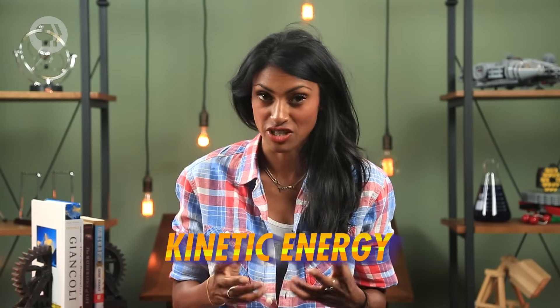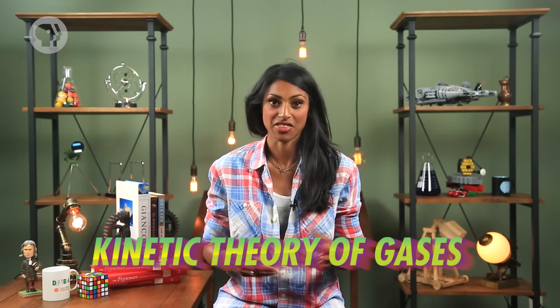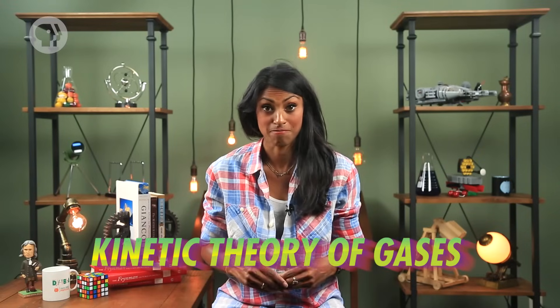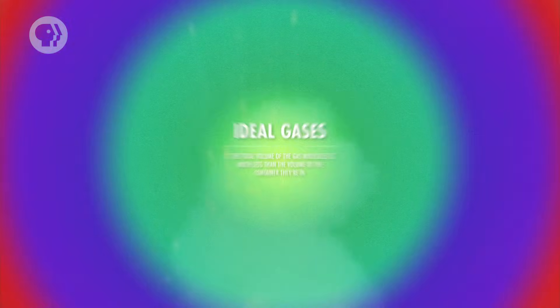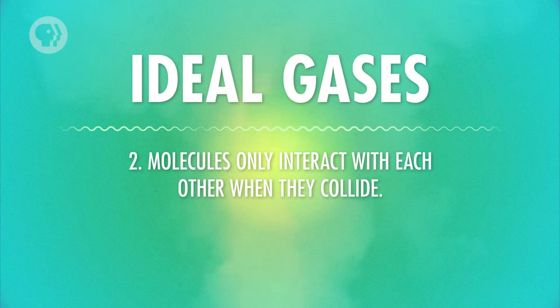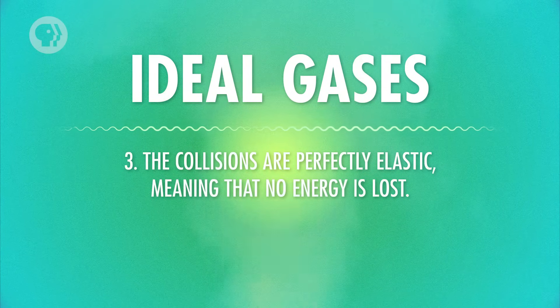We've talked about temperature and how it's a measure of the kinetic energy – the energy of motion of a substance. As temperature increases, so does kinetic energy, because of the kinetic theory of gases, which describes how ideal gas molecules behave. A gas is considered ideal if it fits a few basic assumptions: first, that the total volume of the gas molecules is much less than the volume of the container they're in; second, that these molecules only interact with each other when they collide; and last, that the collisions are perfectly elastic, meaning that no energy is lost.